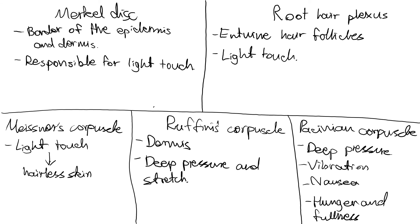In review, we've looked at five different types of nociceptors or receptors today. Merkel disks are at the border of the epidermis and dermis and are responsible for light touch. Root hair plexuses are present at the base of the hair follicle and are also responsible for light touch. Meissner's corpuscles are responsible for light touch and are only found on hairless skin. Ruffini's corpuscles are present deep within the dermis and are responsible for deep pressure and stretch. Pacinian corpuscles are responsible for deep pressure and vibration, but most notably also allow for sensitization of nausea, fullness, and hunger. Thank you very much for watching.